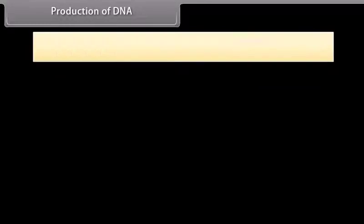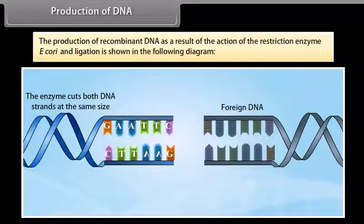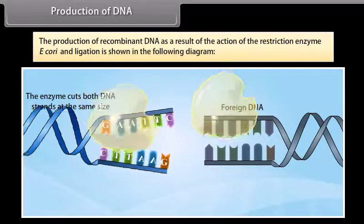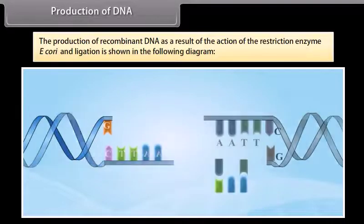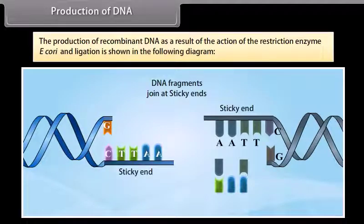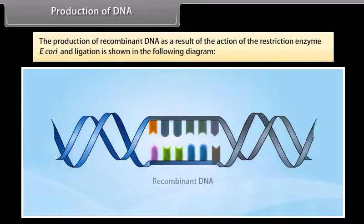Production of recombinant DNA. The production of recombinant DNA as a result of the action of the restriction enzyme EcoRI and ligation is shown in the following diagram. The enzymes cut both DNAs at the same site. After that, both DNA fragments can be joined at the sticky ends, resulting in a recombinant DNA.